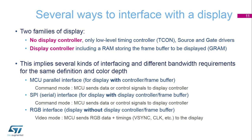First, we can have the MCU parallel interface for displays with controller and frame buffer. This interface works in command mode — the MCU sends data or control signals to the display controller. We also have an SPI or serial interface for displays with display controller and frame buffer, also working in command mode. The only difference between the two is the parallel or serial interface, meaning more or less pins. And finally, we have the RGB interface for displays without display controller and frame buffer. In this case, the MCU sends the RGB data and timing signals such as V-sync and clock to the display. This RGB interface requires a specific IP to handle the display controller, because the CPU alone would be too heavily loaded to render the display.